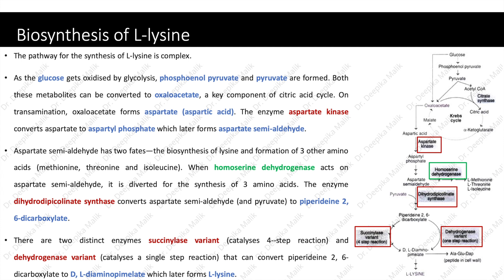This aspartate semi-aldehyde so formed has two fates. First fate is the biosynthesis of lysine, and second is formation of three amino acids: methionine, threonine, and isoleucine. When homoserine dehydrogenase acts on aspartate semi-aldehyde, it is diverted for the synthesis of those three amino acids. Whereas the enzyme dihydrodipicolinate synthase converts aspartate semi-aldehyde and pyruvate to piperidine-2,6-dicarboxylate. There are two distinct enzymes — the succinyl variant, which catalyzes a four-step reaction, and the dehydrogenase variant, which catalyzes a single-step reaction — that can convert piperidine-2,6-dicarboxylate to DL-diaminopimelate, which later forms L-lysine.